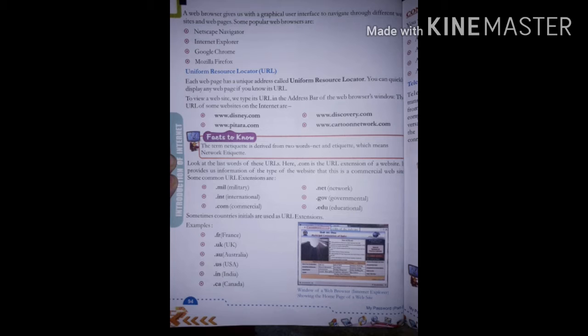Dot com is the URL extension of a website. It provides us information of the type of the website, that this is a commercial website. Some common URL extensions are available.